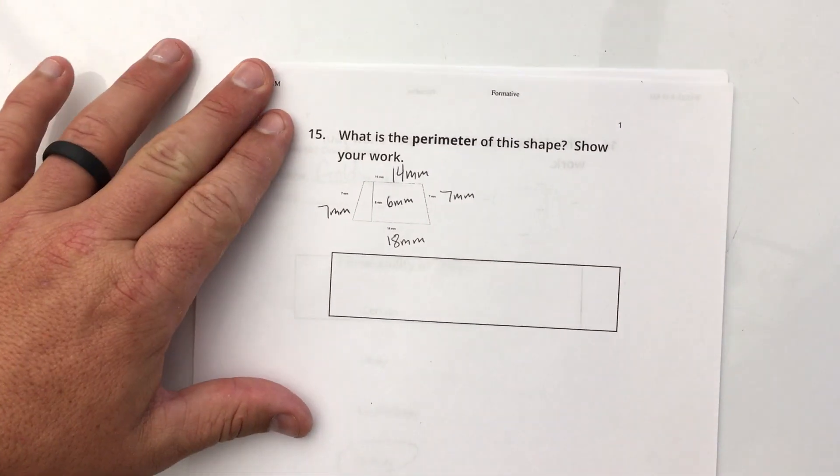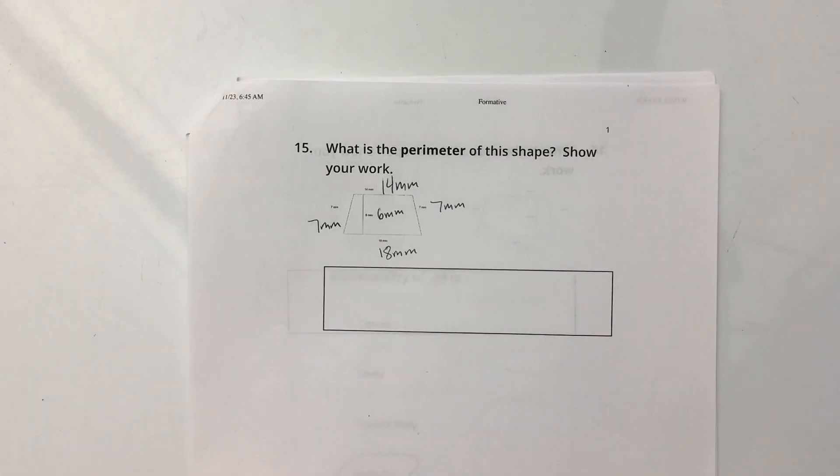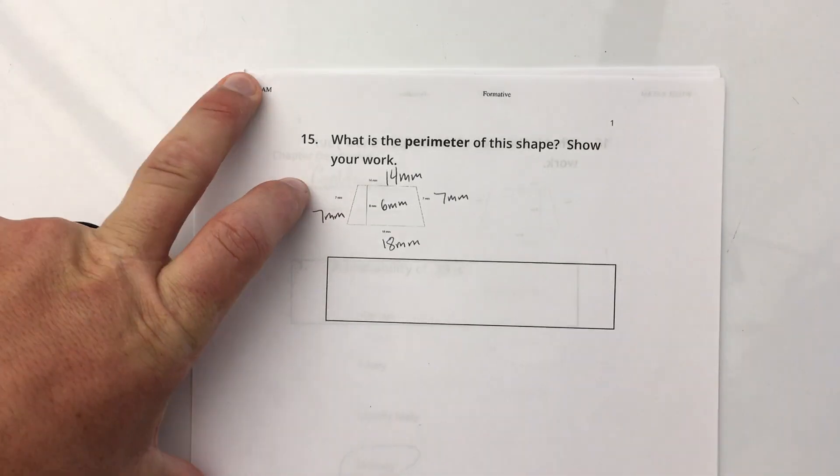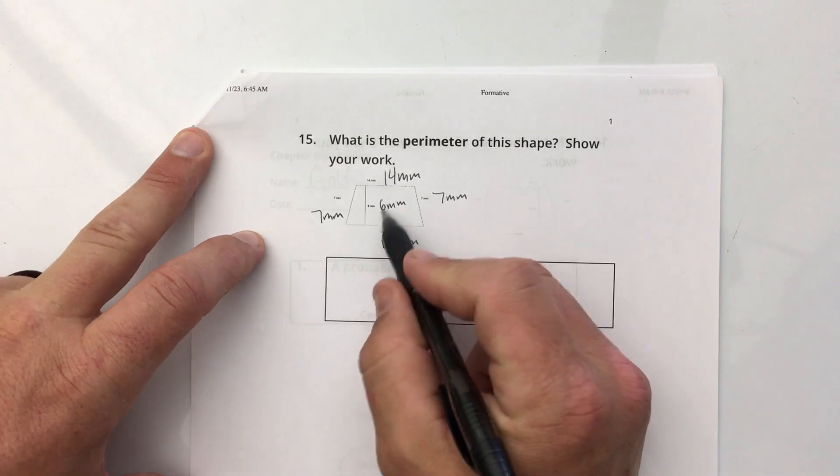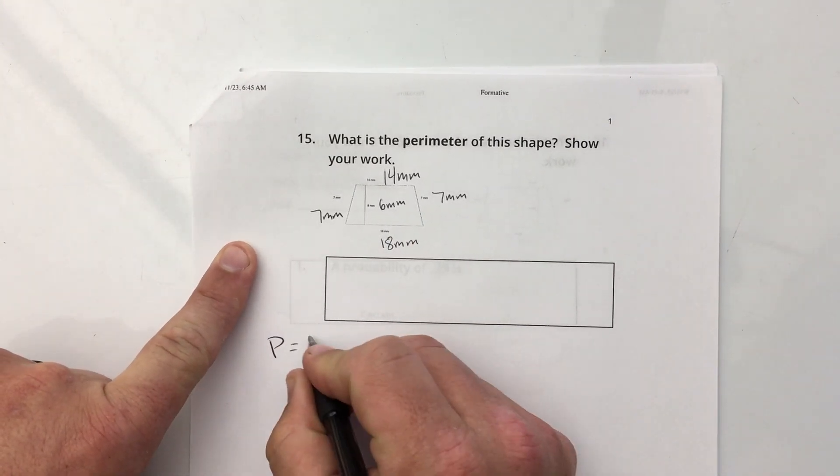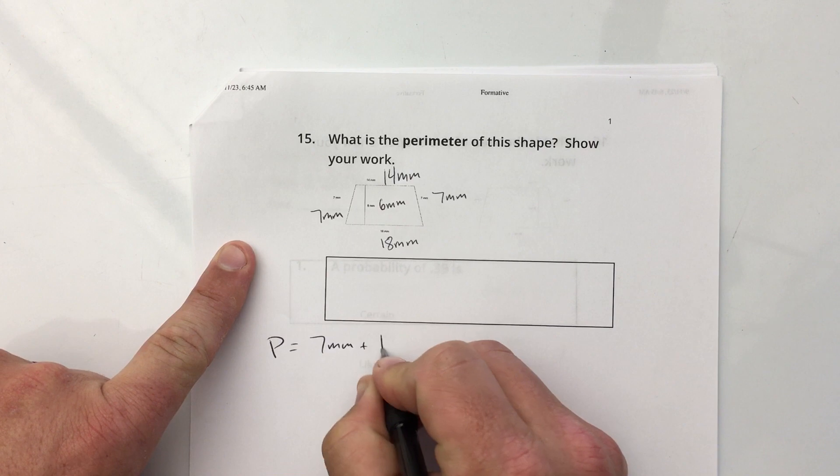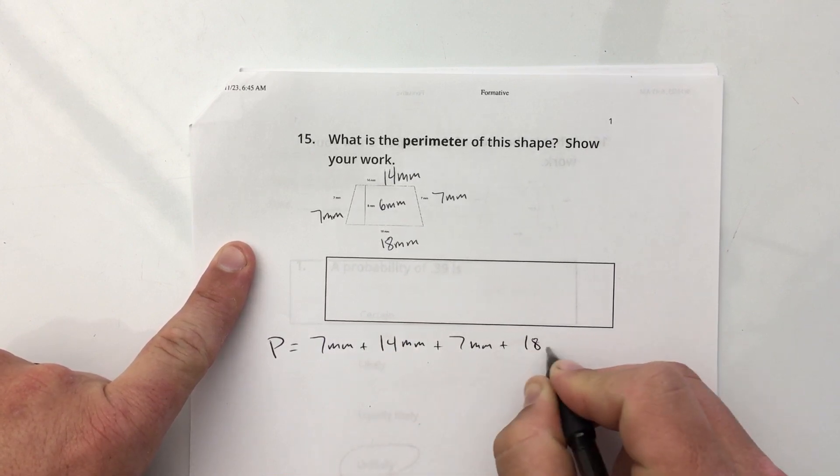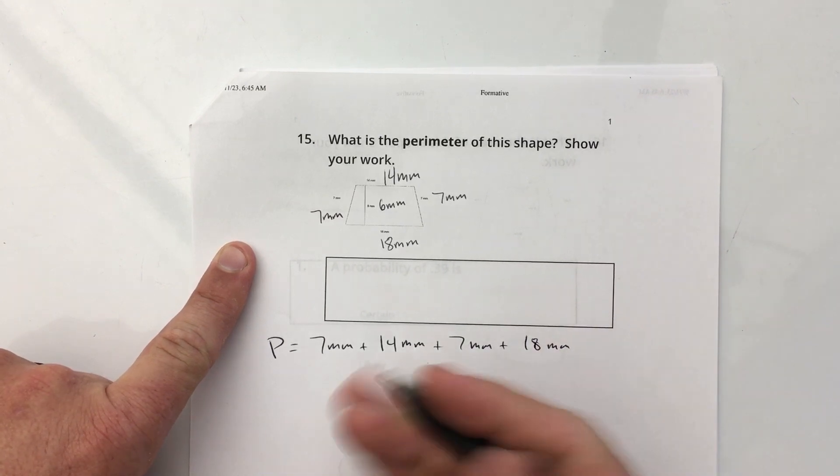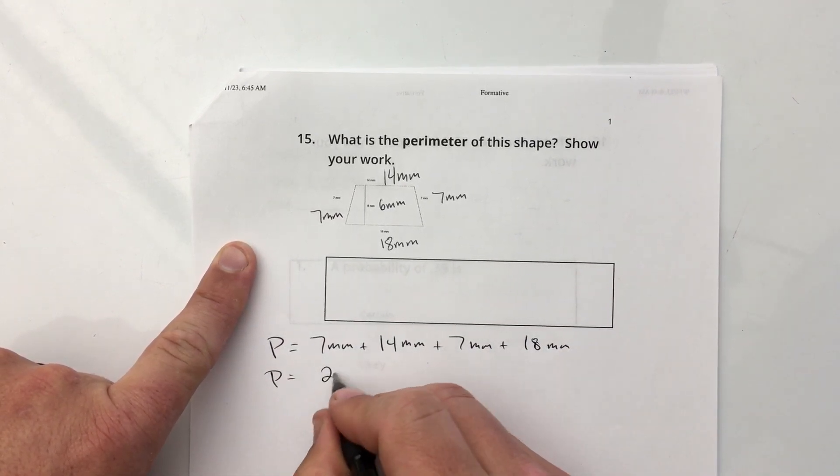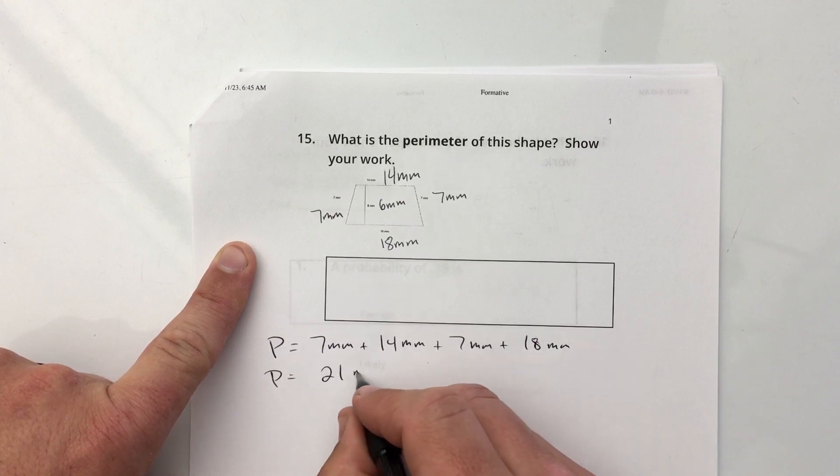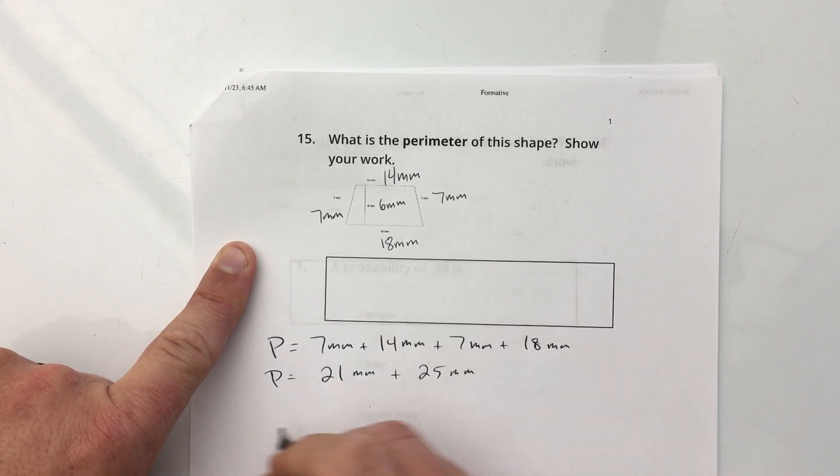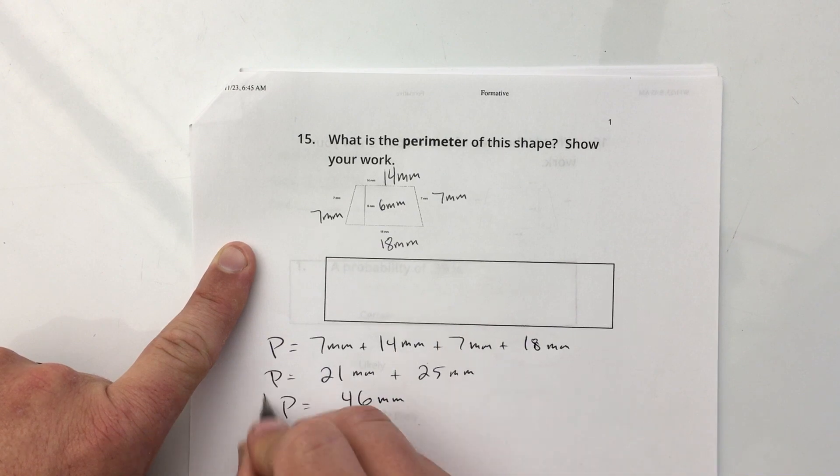Perimeter of this shape. I rewrote the numbers here. It was a little small. So the perimeter, I'm not going to add the 6, right? So for perimeter, I'm just going to add 7 millimeters plus 14 millimeters plus 7 millimeters plus 18 millimeters. Just add those all up. 7 plus 14 is 21 millimeters plus 25 millimeters. So the perimeter should be 46 millimeters.